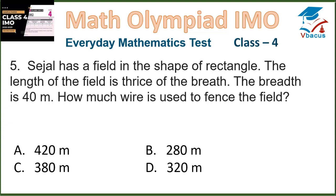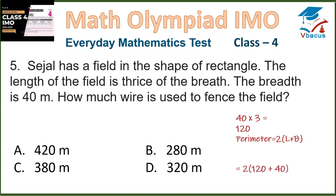Sejal has a field in the shape of a rectangle. The length of the field is thrice the breadth — thrice means 3 times. The breadth is 40 meters, so the length is 40 times 3, which is 120 meters. They asked how much wire is used to fence the field, so we find the perimeter: 2 times (length plus breadth) = 2 times (120 plus 40) = 2 times 160 = 320 meters, which is option D.